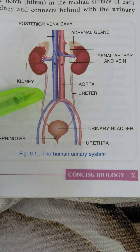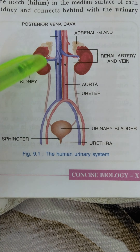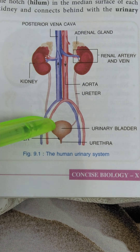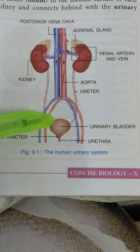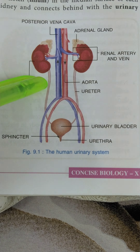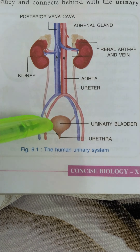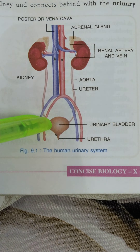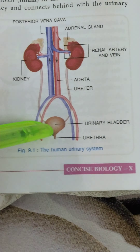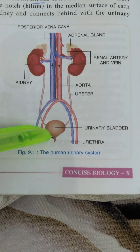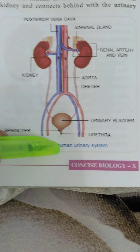The ureters are two in number, and they transport urine from the kidneys to the bladder for storage. They arise from the center part of the kidneys and end into the sac-like structure called the urinary bladder. Their function is to transport urine from the kidneys to the bladder. The bladder is a single sac-like structure which stores urine for some time until it is full, and then empties its contents to the outside with the help of a single muscular tube at the end called the urethra.